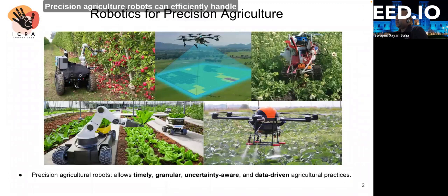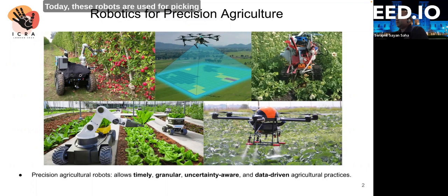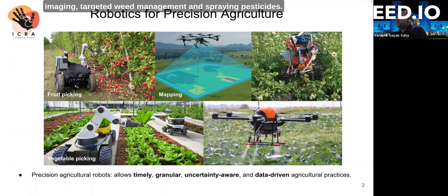Precision Agricultural Robots can efficiently handle variability and uncertainty in agricultural practices to optimize production and costs. Today, these robots are used for picking produce, monitoring plant health through aerial multispectral imaging, targeted weed management, and spraying pesticides.